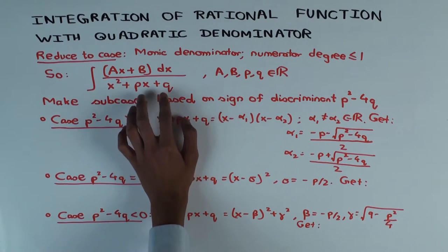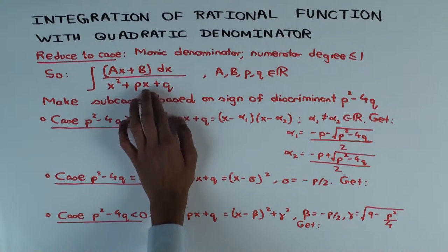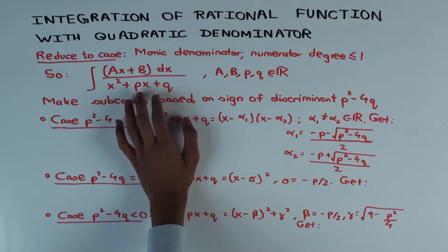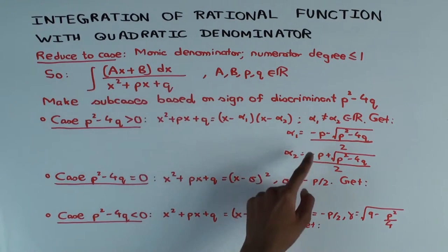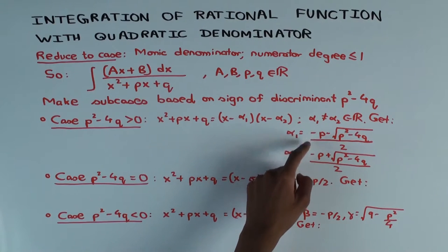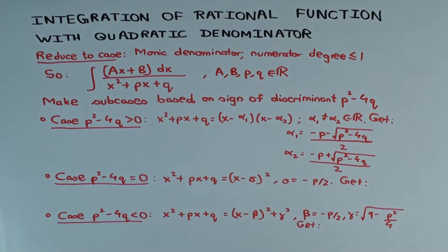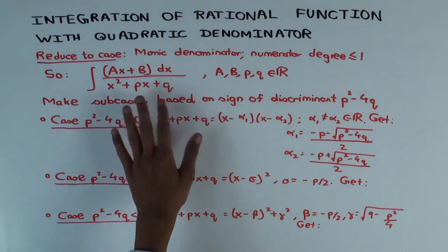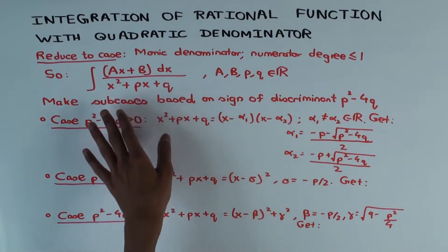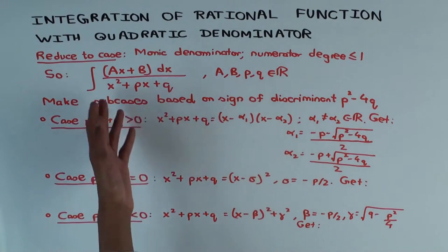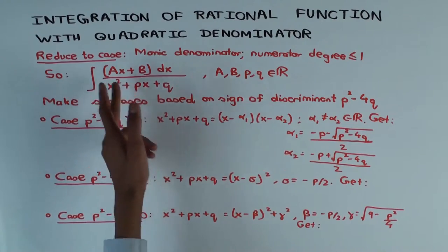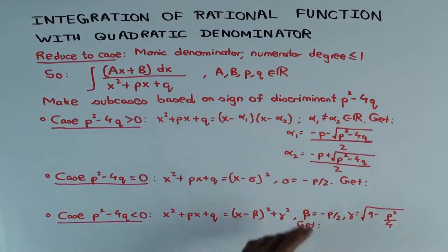Let's first consider the case where the discriminant is positive. That means the denominator has two distinct real roots. The roots are given by the quadratic formula. I have taken alpha one to be the smaller root and alpha two to be the larger one. The reason I made the denominator monic is to make the formulas clean up.